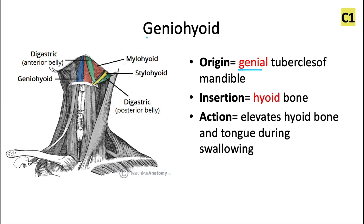The genial tubercles are also known as the mental spines, but 'genial' helps us remember the geniohyoid. The hyoid bone is where it's inserting. This one's going to elevate the hyoid bone and the tongue during the swallowing process.